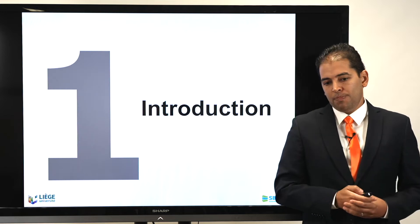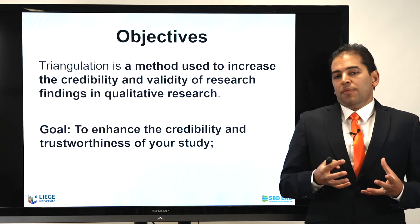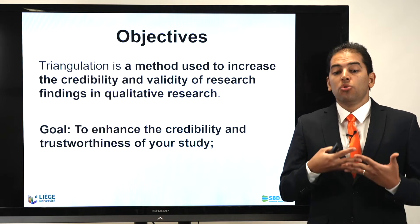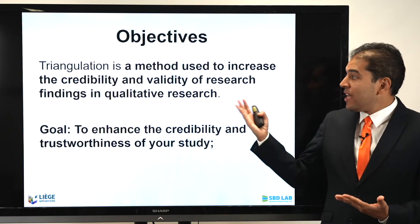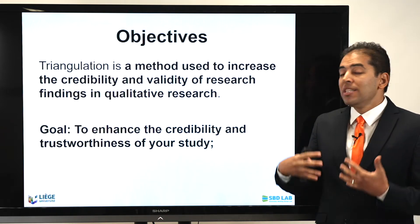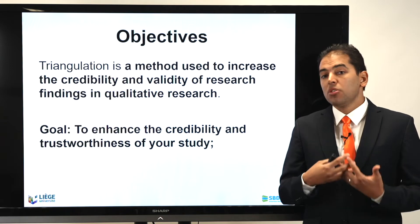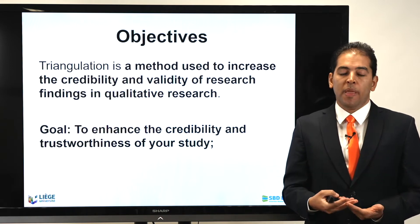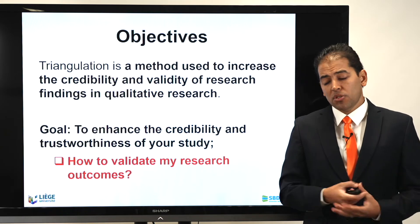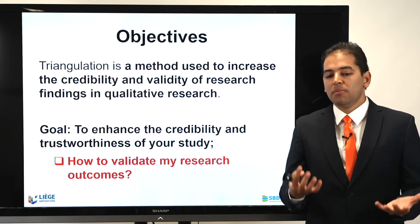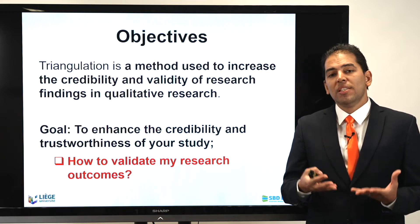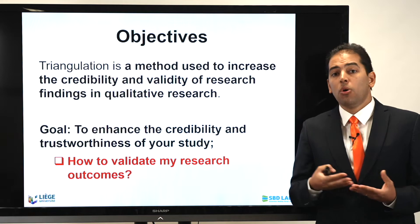Let's start with the introduction. The objective of triangulation is simple. Triangulation is a method used to increase the credibility and validity of research findings in qualitative research. The goal is to enhance the credibility and trustworthiness of your study. When we conduct qualitative research, we ask ourselves how to validate our research and make our outcomes trustworthy, especially since qualitative research findings are always biased.